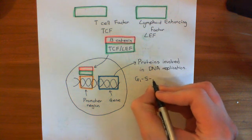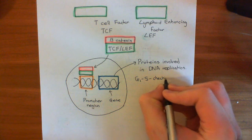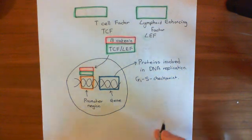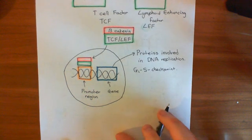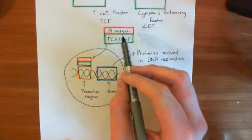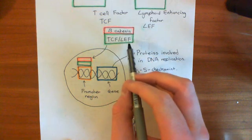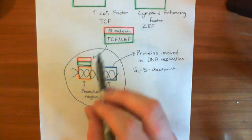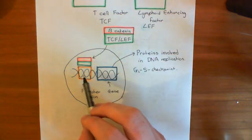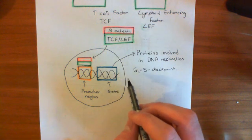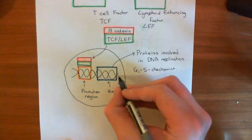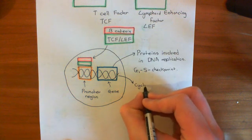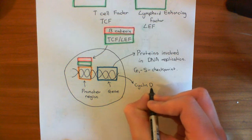Beta-catenin also plays a role in getting you past this G1S checkpoint. What beta-catenin has been found to do is, working together with these T-cell factors/lymphoid-enhancing factors as a transcription factor complex, it will bind to the promoter region of a gene known as cyclin D and increase its transcription. So basically, beta-catenin activates the transcription of a protein known as cyclin D.